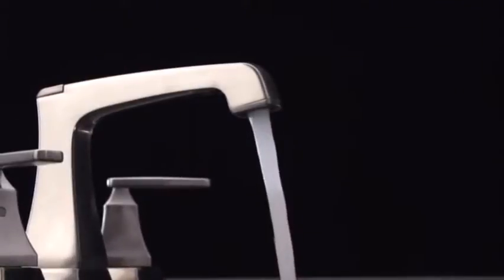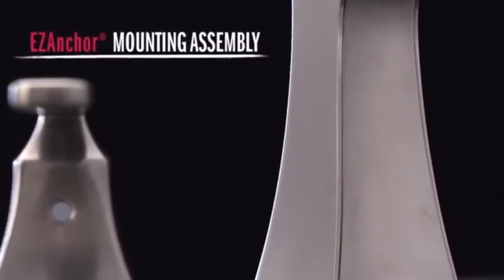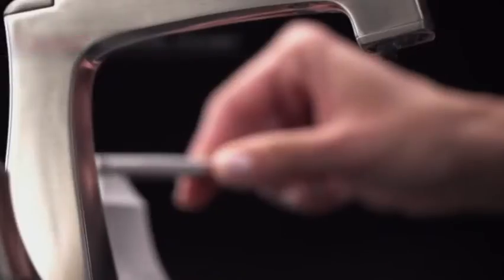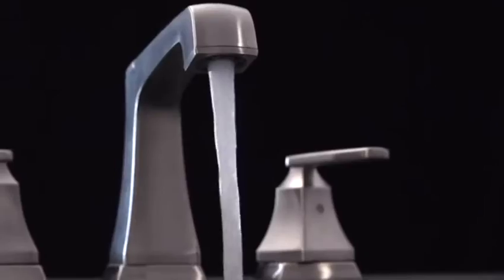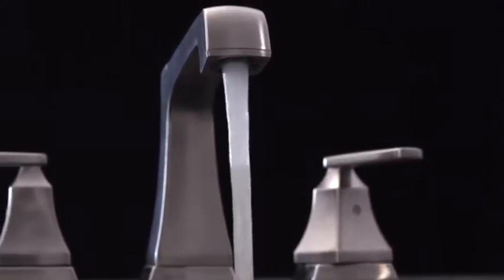The Ashland Widespread Lavatory Faucet is the first of its kind to offer the easy anchor mounting assembly, which allows you to mount the faucet from above the sink without having to reach under to adjust multiple times.